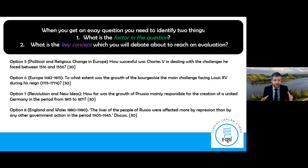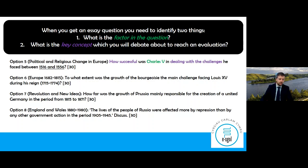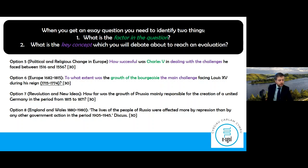Option five, political and religious change in Europe: 'How successful was Charles V in dealing with the challenges he faced between 1516 and 1556?' The factor is Charles V and the key concept is how successful he was in dealing with those challenges. Option six, Europe 1682 to 1815: 'To what extent was the growth of the bourgeoisie the main challenge facing Louis XV during his reign 1715 to 1774?' The factor is the growth of the bourgeoisie, and the key concept is to what extent this was the main challenge.